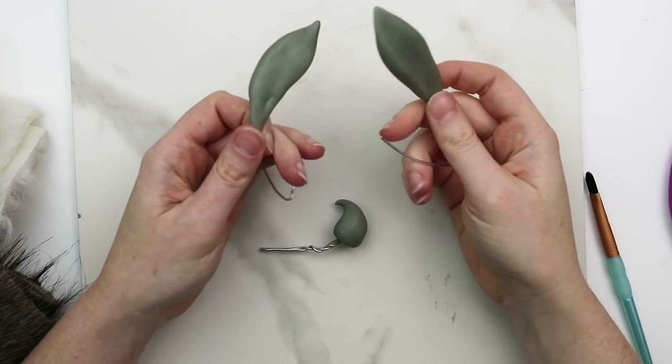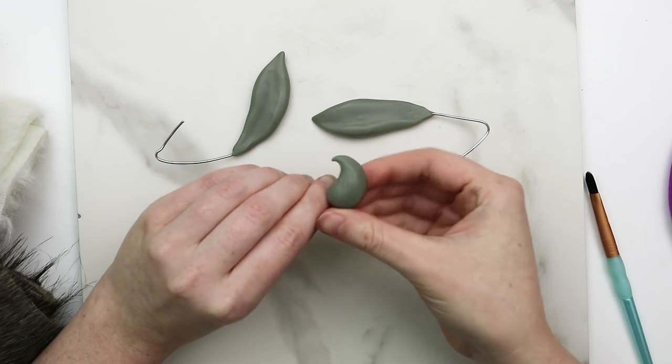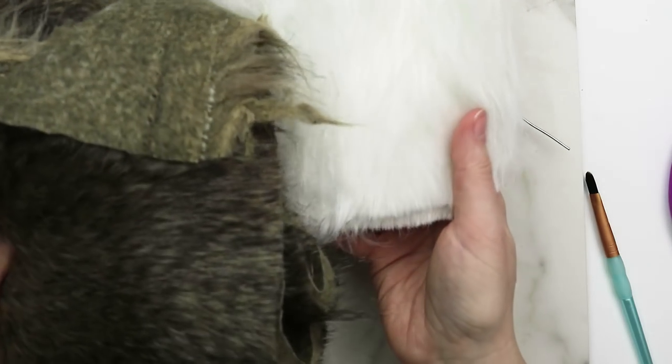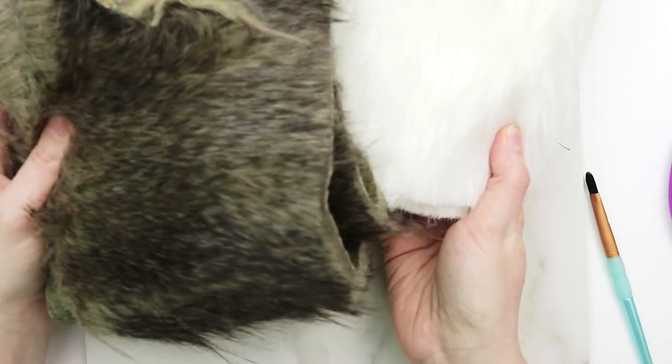Using more epoxy clay and some armature wire, I sculpted her a couple of ears and a little tail. Using some Mod Podge and this faux fur that I've got at Joann's, I'm going to go ahead and start giving her tail and ears some fur.